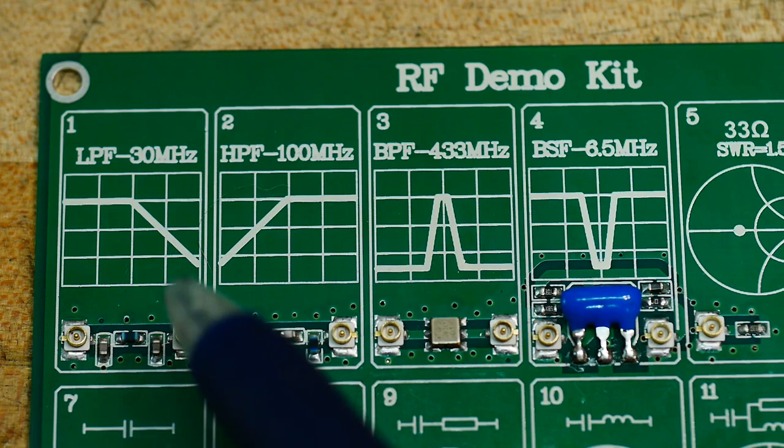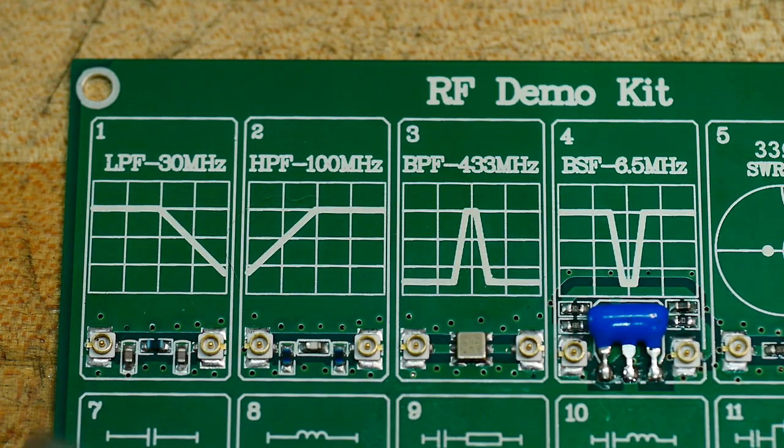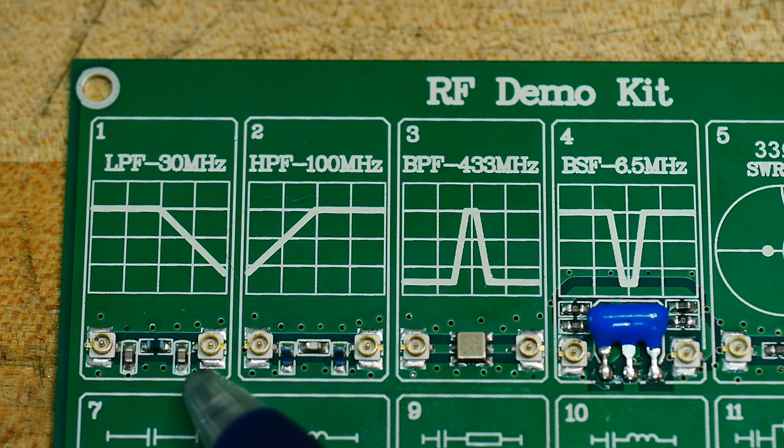All right. So this is the low-pass filter. It says 30 megahertz. And here are these tiny little connectors, connector and connector. And then here's the Pi network in between.